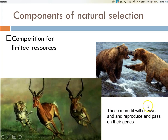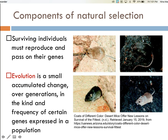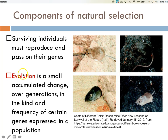In order for natural selection to occur, the individuals that are more fit for the environment must reproduce and pass on their genes. Take the example of the Arizona pocket mouse. The lighter colored mice living on lighter environments escape predation by birds and live to reproduce and pass on their genes. In this environment, more light colored mice are observed. However, when the same species of mice live on dark lava, those mice with the dark mutation escape predation and live to reproduce. In the dark environment, the population of mice is dark. There is a genetic shift in the population towards a high frequency of mice with dark coloration. Evolution is described as a small accumulated change over generations in the kind and frequency of certain genes expressed in a population.